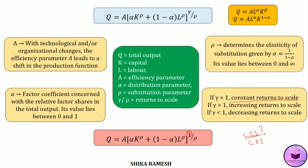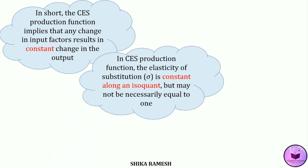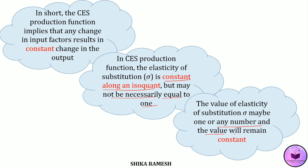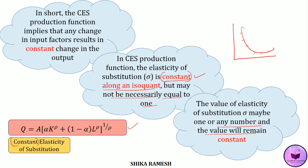But how does this production function have a constant elasticity of substitution? It basically means that for a CES production function, the value of the elasticity of substitution will be constant along an isoquant — but it is not necessarily equal to 1. It may be 1 or it can be any number between 0 and infinity. But at any point on the isoquant, the elasticity of substitution will be constant. If we represent this production function graphically, we get an isoquant, and whatever the shape, the elasticity of substitution at any point along it remains the same. That is what is meant by a production function having a constant elasticity of substitution.